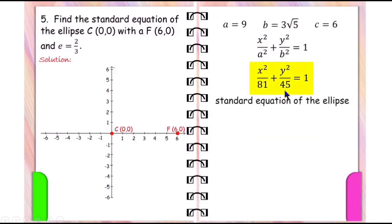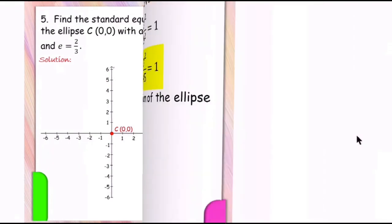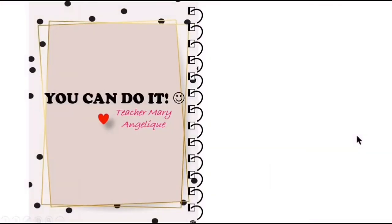And that is all about the ellipse with center at the origin. In the next video, we will discuss the ellipse whose center is located at a particular point (h, k), not at the origin.